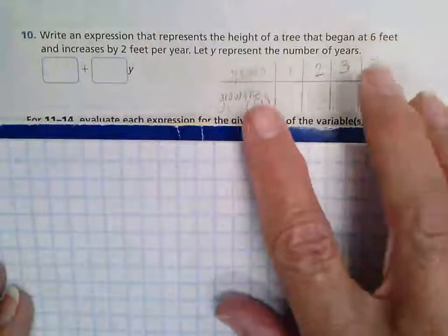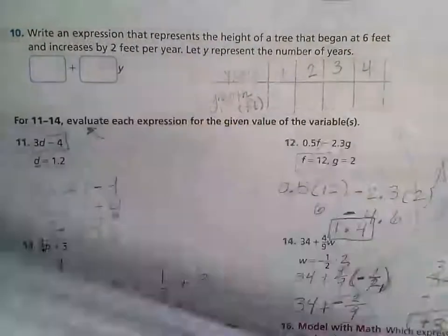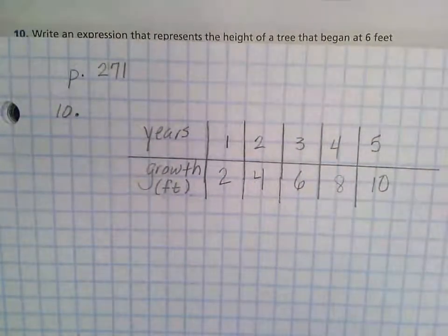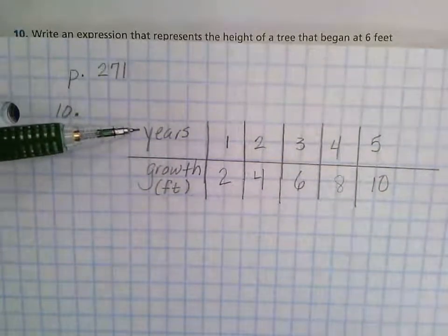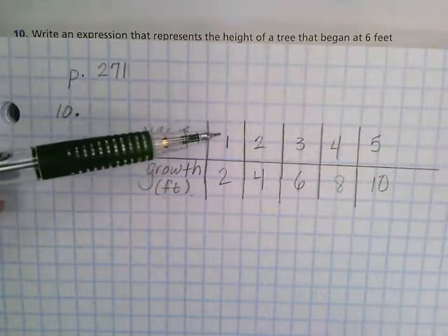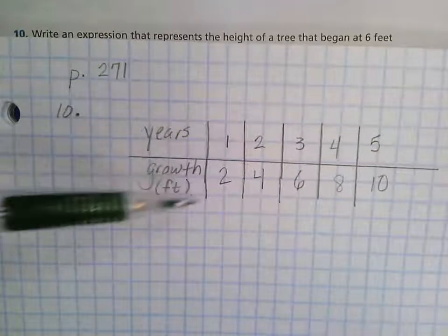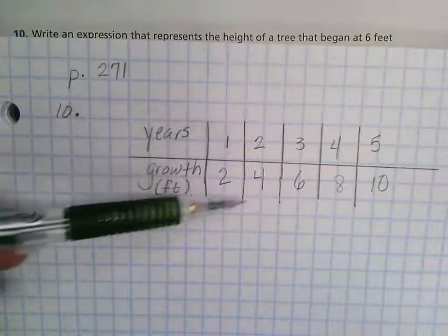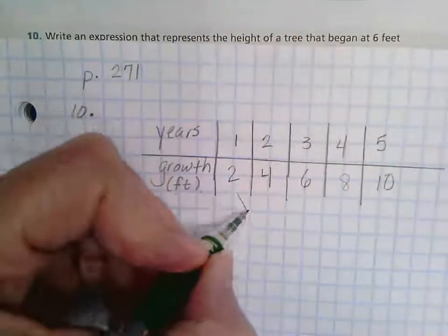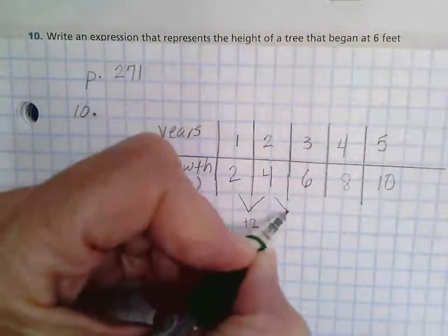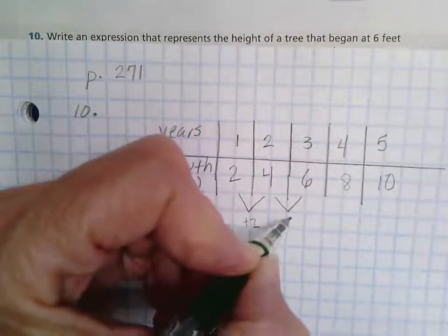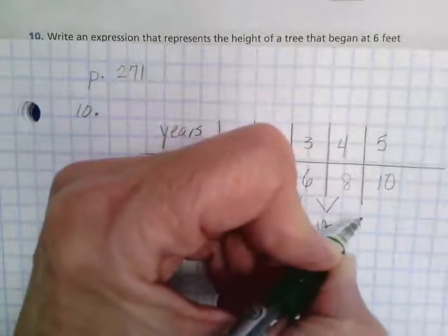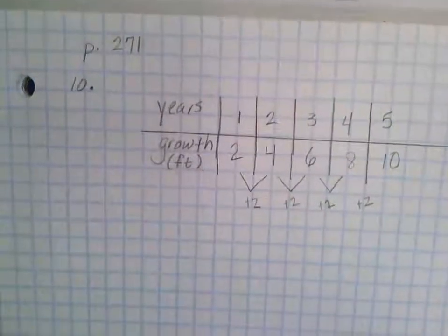I'm going to write this in my notebook and you can see that I already filled it in. After one year's growth it has added two more feet and after two years growth it's added four more feet. So you can see it's adding two feet per year just like it said in the problem.